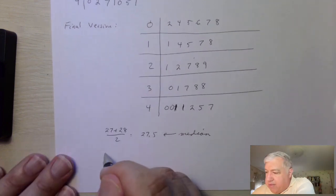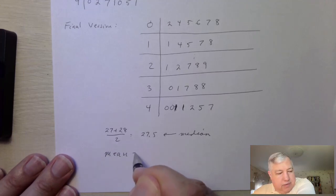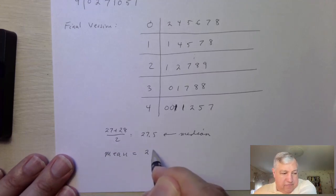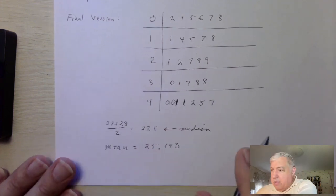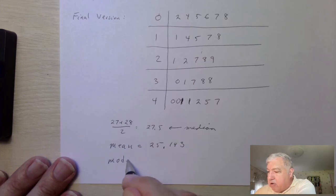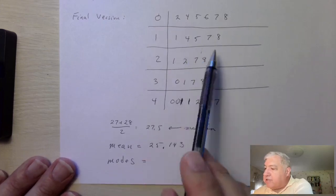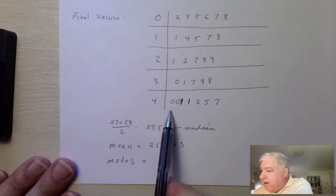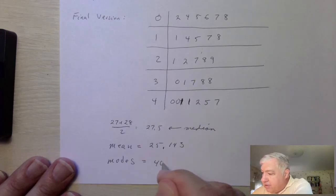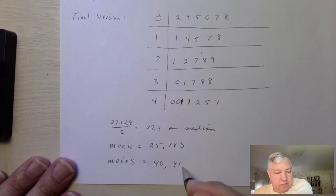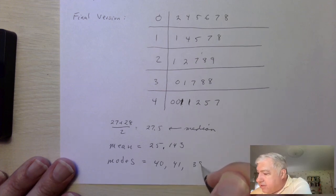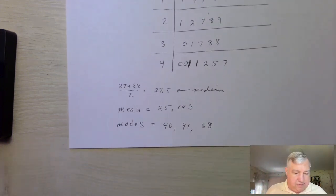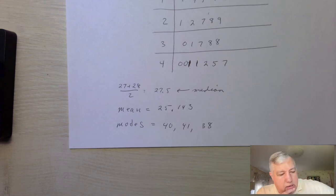Using the calculator, the mean is 25.143. For the mode, we look for repeated digits. We have two 40s, two 41s, and two 38s, so we have three modes in this case.